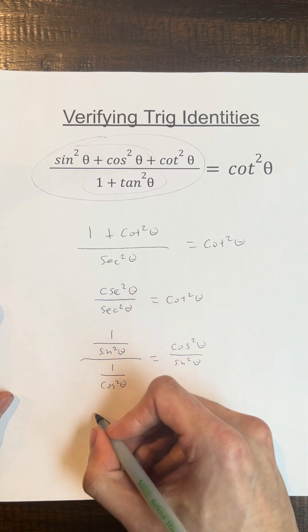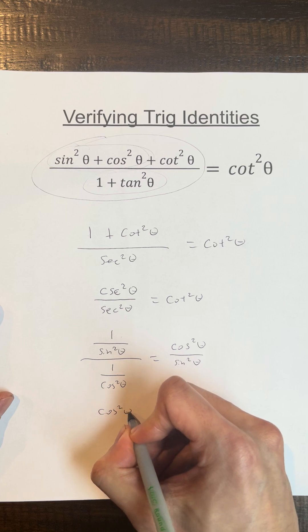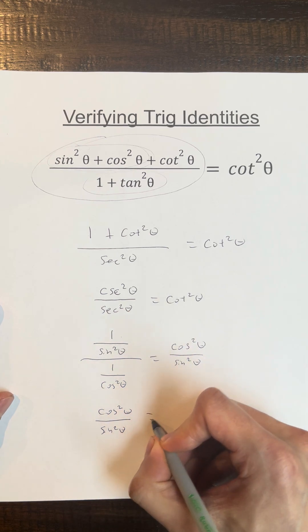Okay, and this simplifies as cosine squared theta over sine squared theta. We're going to leave this side alone.